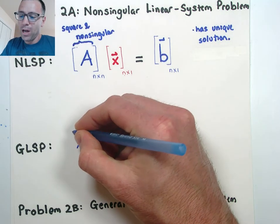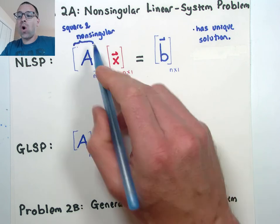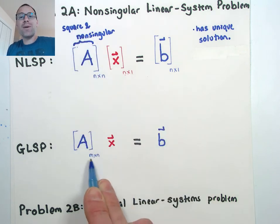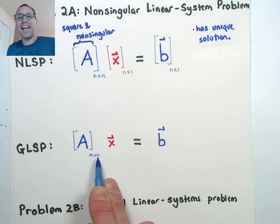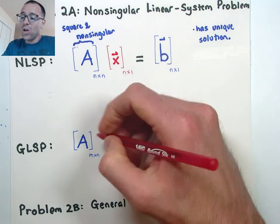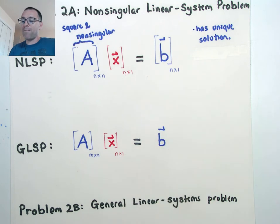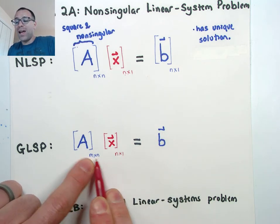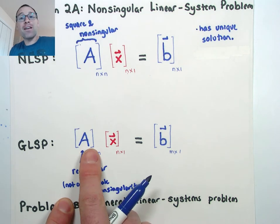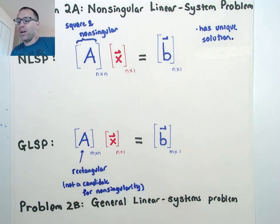When we look at the general linear system, the matrix A no longer has to be non-singular. Moreover, it doesn't even have to be square. Remember, all non-singular matrices must be square, but not all square matrices are non-singular. The moment I know this matrix is generally rectangular — that M does not have to equal N — I can immediately say that's probably not non-singular. The inner dimensions must still agree, so vector X is N by 1. But since A is rectangular, it's not even a candidate for non-singularity. Only square matrices can be non-singular.